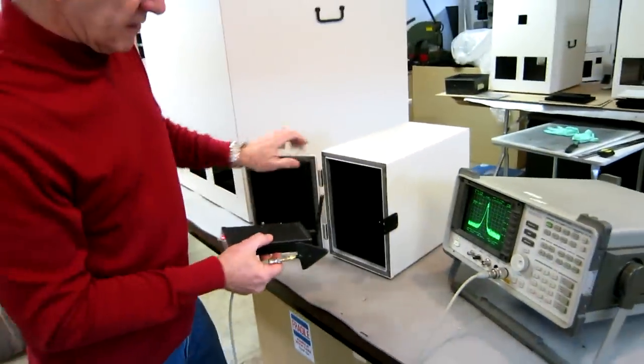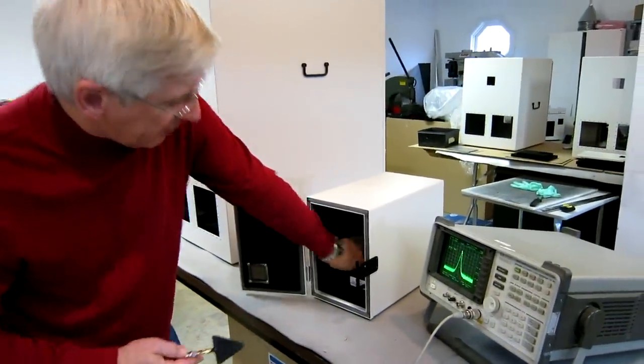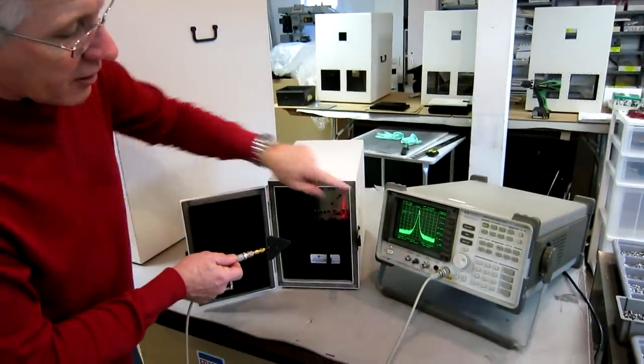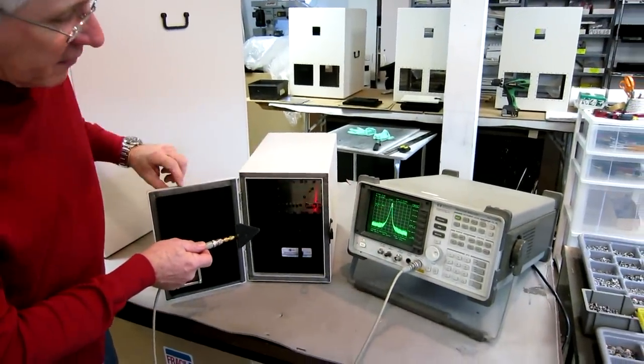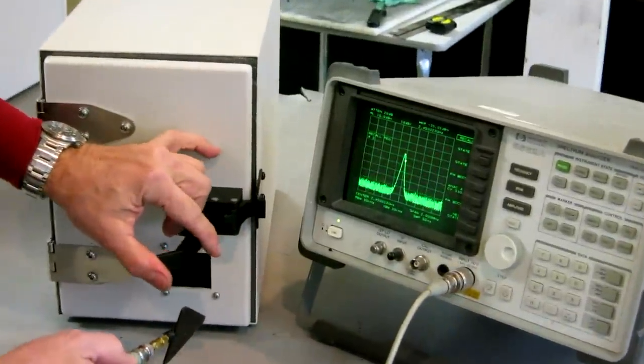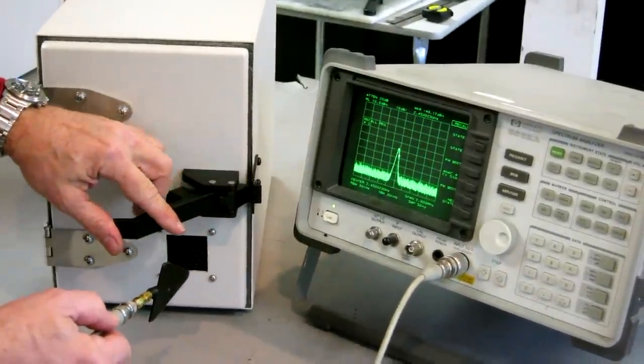So in this case, we take our test enclosure, put the signal source inside, and you'll notice now as I close the door, you'll see this peak slowly drop as the box is shielding out more and more of the signal.